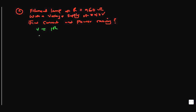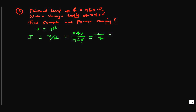Starting with Ohm's Law: V = IR. The current I = V/R, which is 240 divided by 960. That gives us 0.25 amps.